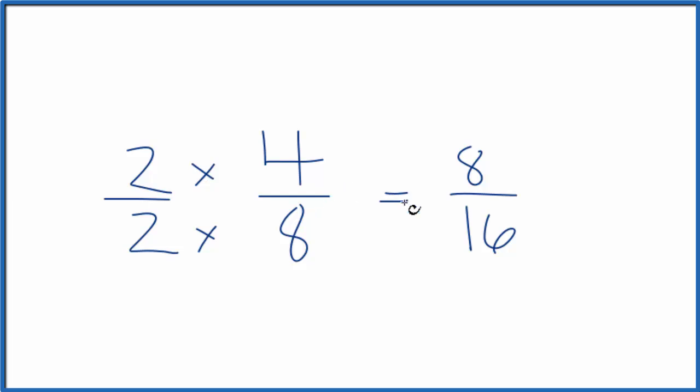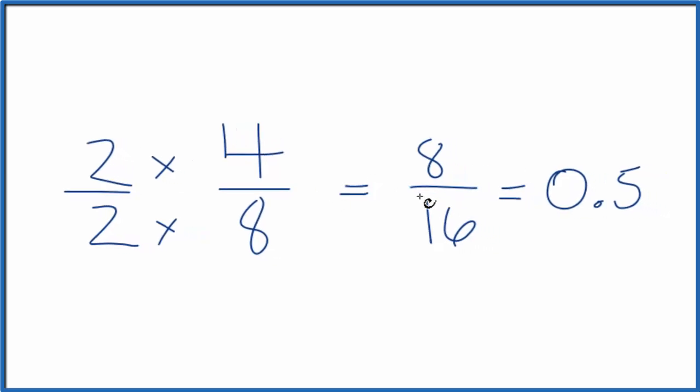If you divide 4 by 8 or 8 by 16, it equals 0.5. Both of them are the same. They're equivalent.